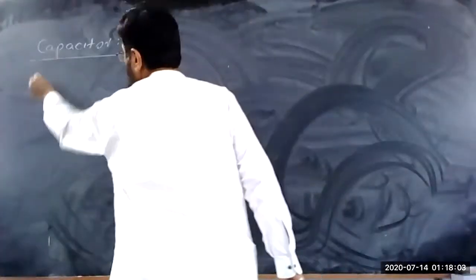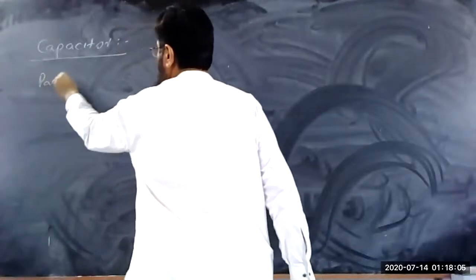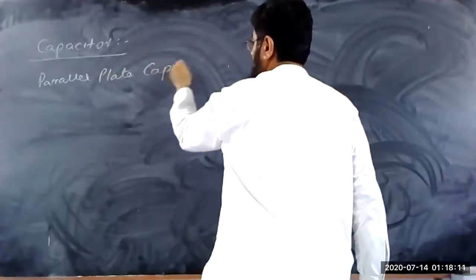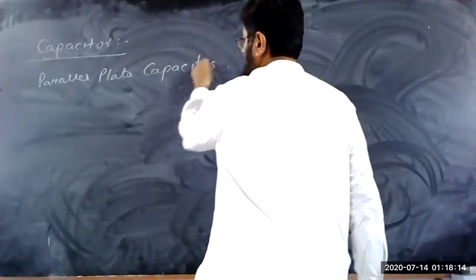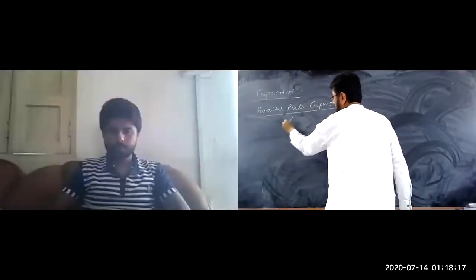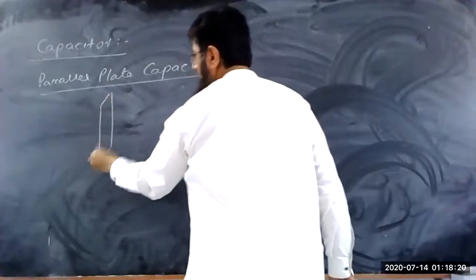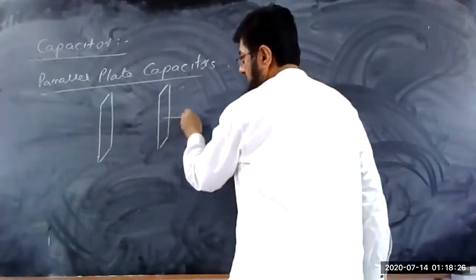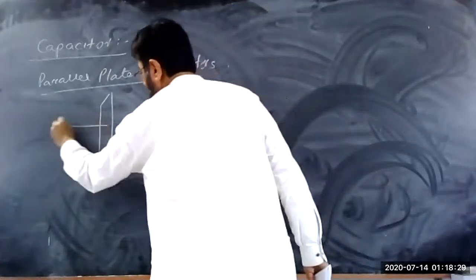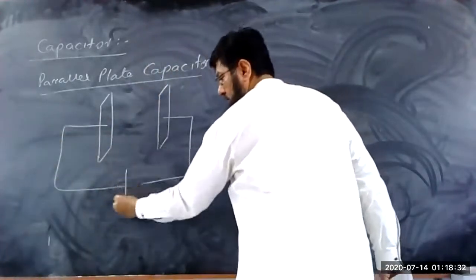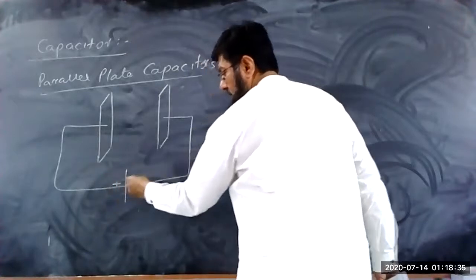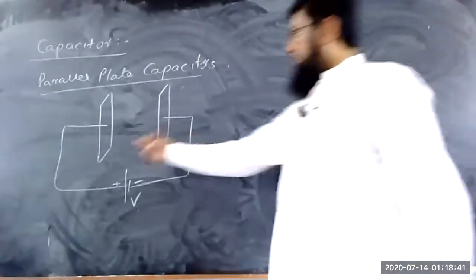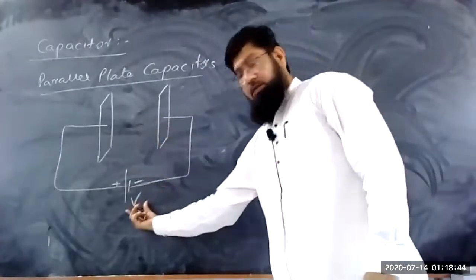There are parallel plate capacitors. These are the two plates of the capacitor — this is one plate, this is the other plate. These two plates are connected with a battery which has a potential difference, a positive terminal and a negative terminal.